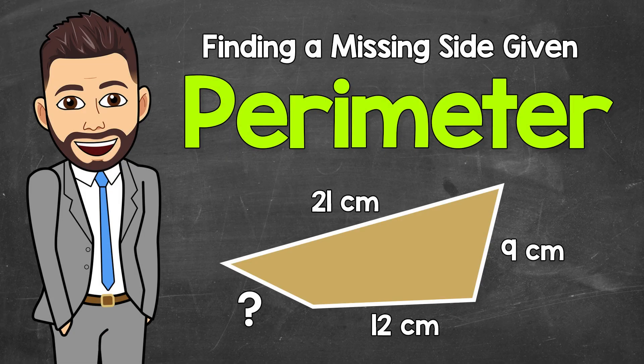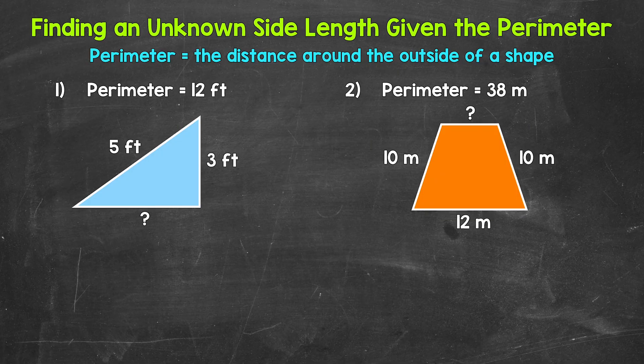Welcome to Math with Mr. J. In this video, I'm going to cover how to find an unknown side length given the perimeter. Remember, perimeter is the distance around the outside of a shape, so we can find the perimeter of something by adding all of the side lengths.